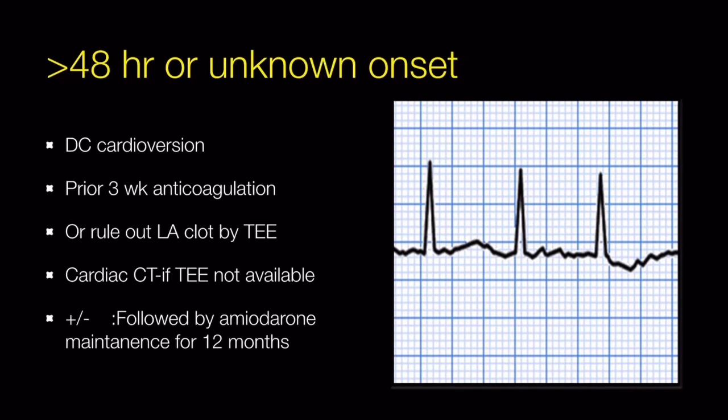We must continue anticoagulation for at least three weeks after cardioversion because the atrium is still not contracting normally due to stunning. After three weeks, we reassess stroke risk by CHA₂DS₂-VASc and continue anticoagulation accordingly. This may or may not be followed by antiarrhythmic drug maintenance for 12 months, based on clinical judgment.